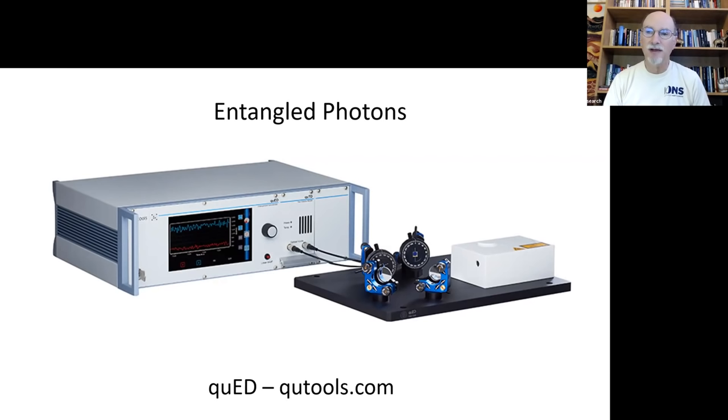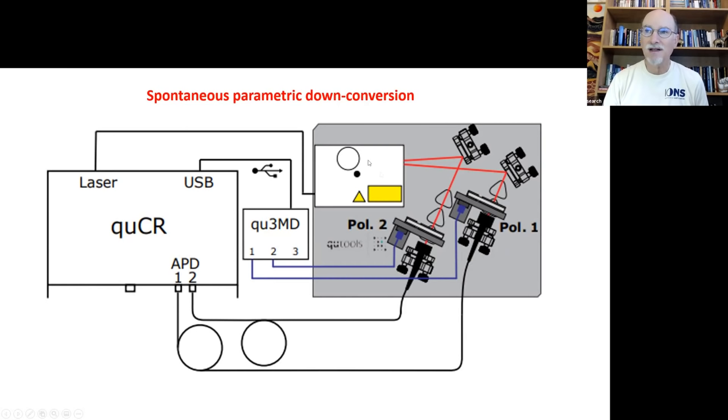More recently, we just finished, we haven't published this yet, an experiment involving entangled photons. And this is a little bit closer to what the physicist was mentioning in New Scientist. It's about testing the non-local properties of quantum mechanics. So that's what entangled photons are all about. So that's what it looks like.